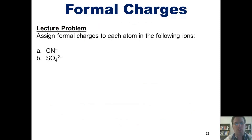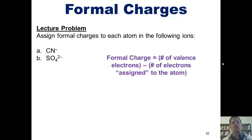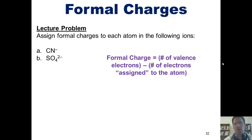I want you to assign formal charges to each atom in the following ions. You're welcome to pause the video and attempt this on your own, as I'm going to show you the answers to both of these right now. In order to calculate the formal charges for each atom in our first example, CN⁻, we have to remember the formula: formal charge equals the number of valence electrons in each atom minus the number of electrons assigned to the atom. First, we have to draw the Lewis structure for CN⁻, which looks like this.